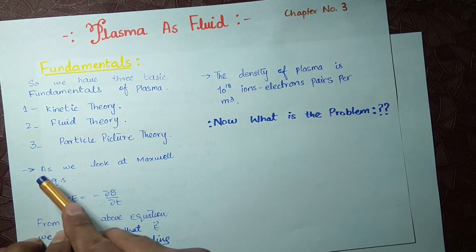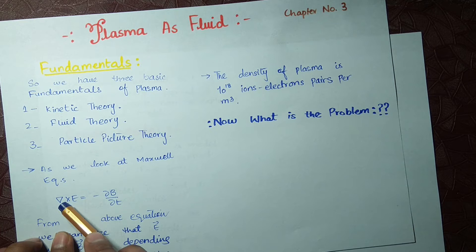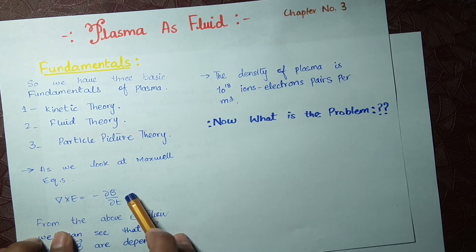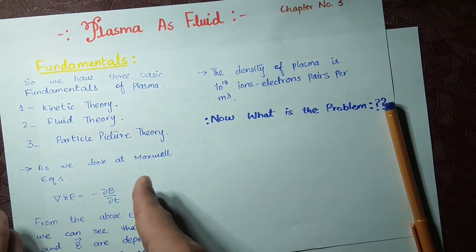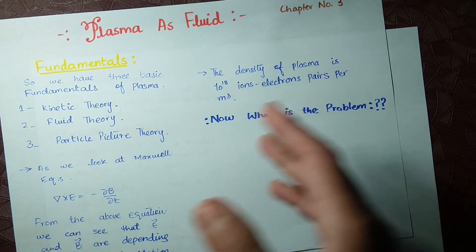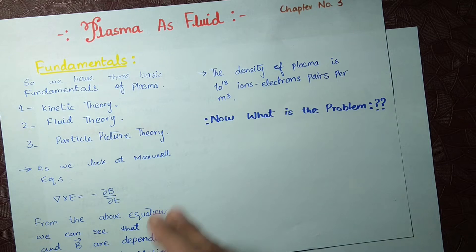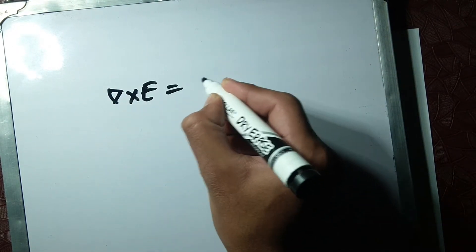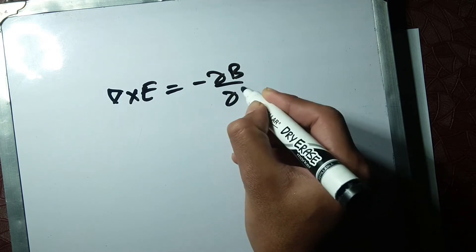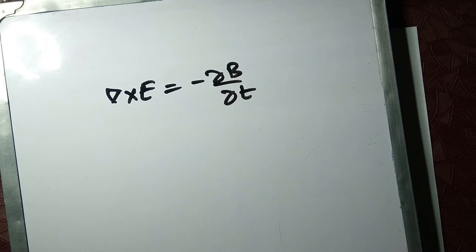Look at this equation — the third Maxwell equation, also known as Faraday's law in differential form. It states that curl of E equals minus partial B by partial T. I use this as an analogy to help you understand how electric and magnetic fields help us study plasma as a fluid. We write: curl of E = −∂B/∂t.